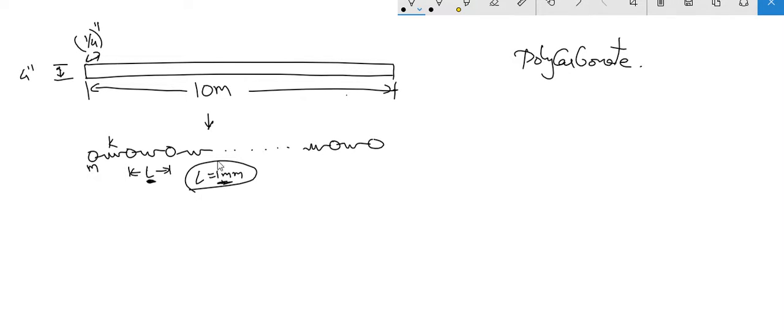Now because this is 1 mm and the total length is 10 meters, then the number of masses required would be n equals 10 meters by 1 mm, which means 10 raised to 4 masses will be required to sufficiently represent this mass. And each of those masses is equal to the total mass of the beam divided by 10 raised to 4. And the mass of the beam is the volume of the beam multiplied by the density divided by 10 raised to 4.